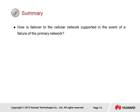In summary for this section, we have one question: how is failover to the cellular network supported in the event of a failure of the primary network? The configured default IP static route acts as a last resort for traffic in the routing table and, should it be used, will forward traffic to the cellular interface. This will cause the dial control center to initiate the failover connection over the cellular interface, with negotiation performed using PPP.